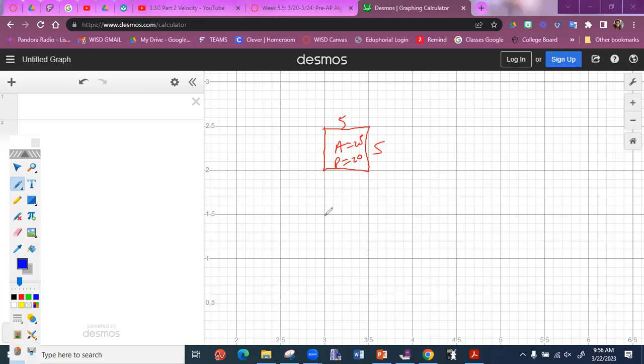I can make another shape that has a perimeter of 20. What if I have a 2 by 8? So this is a 2 by 8. What is the perimeter of that 2 by 8? It's still 20. But what is the area of it now? 16. Your perimeter can be the same, but your area will not be.